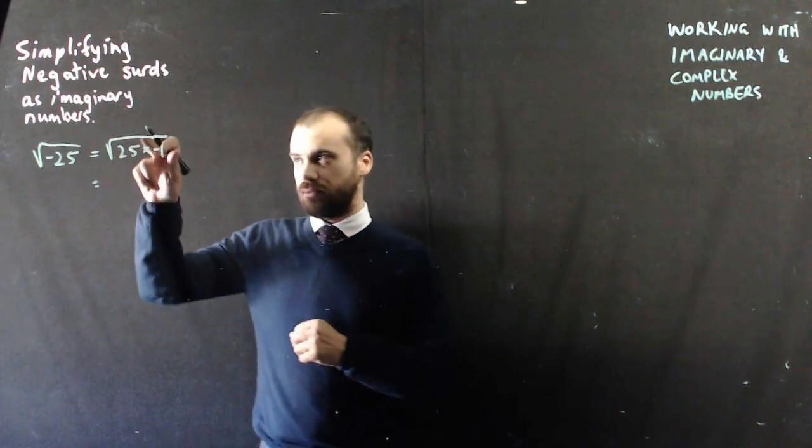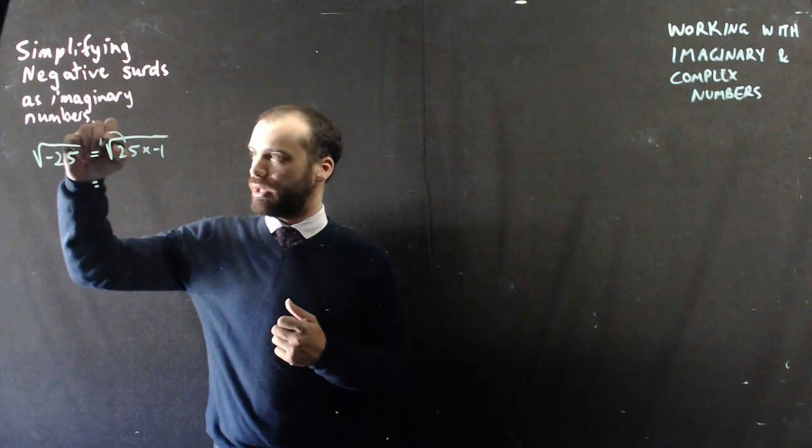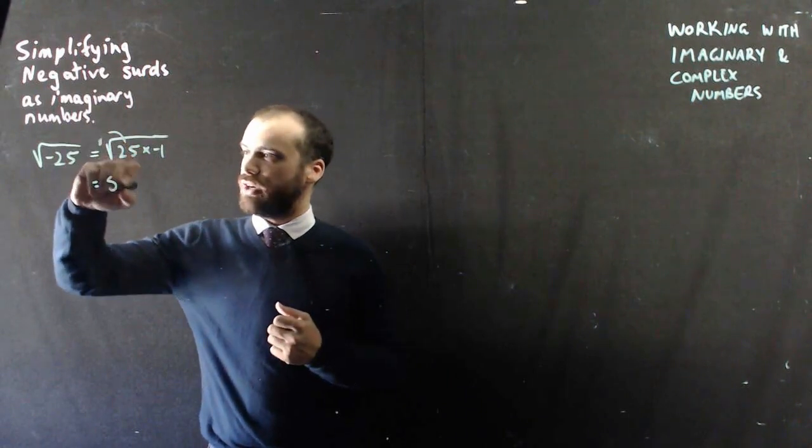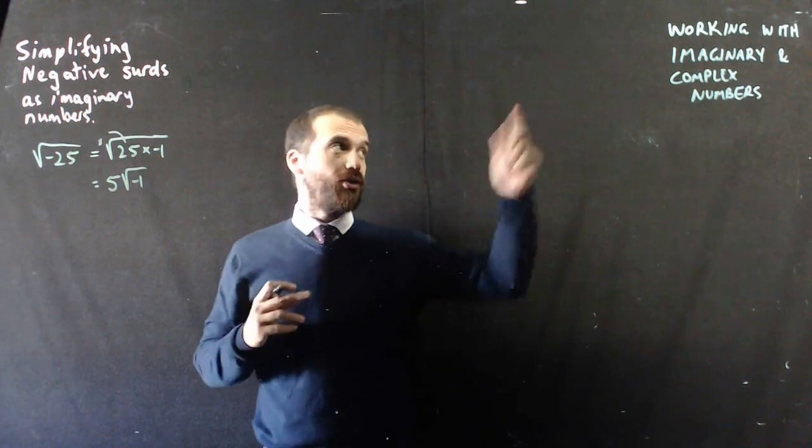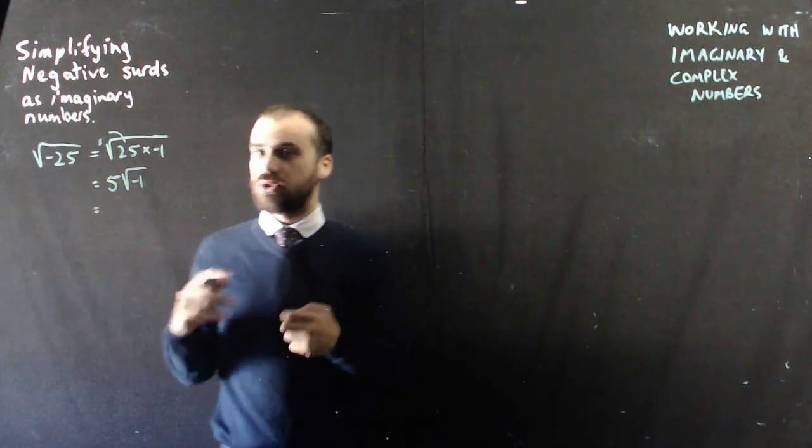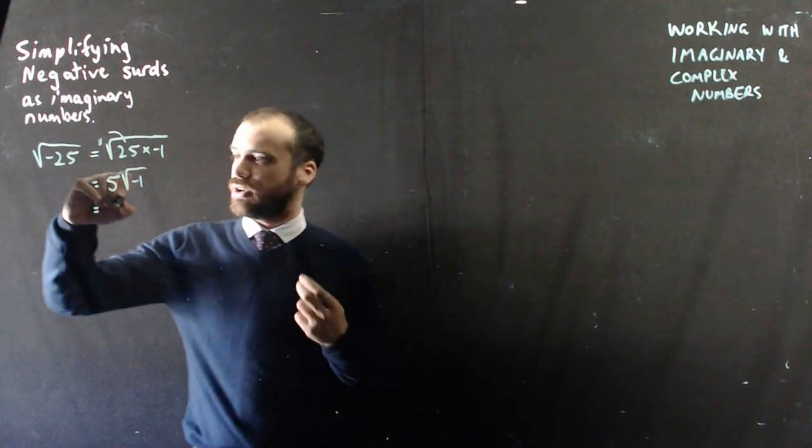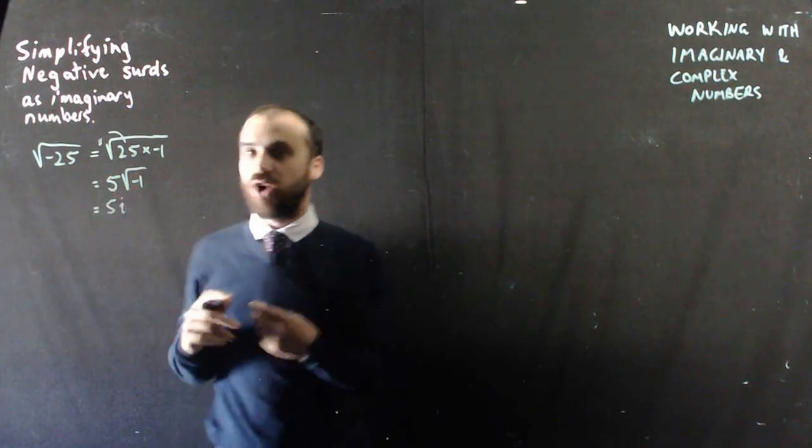Now that root 25 I can pull out as just 5, and what I'm left with is the square root of negative 1. And we know from our previous video that the square root of negative 1 is i, so our answer here is 5i.